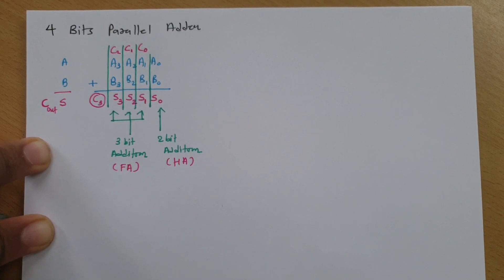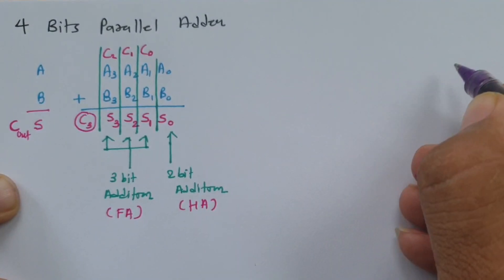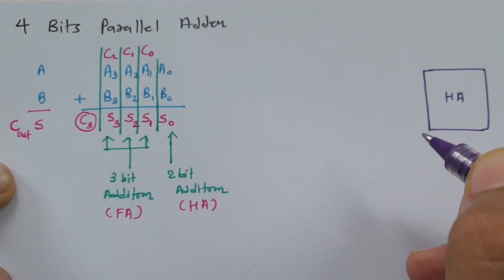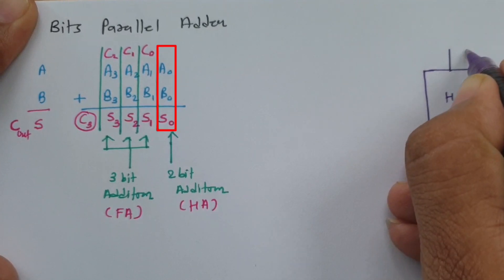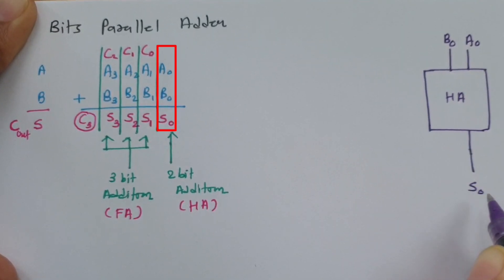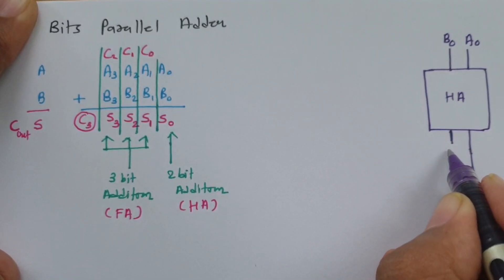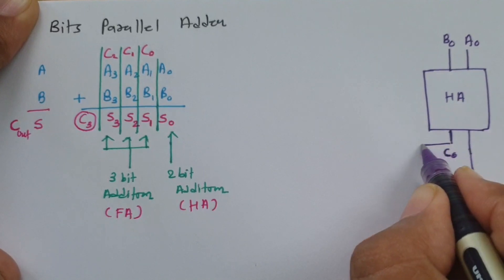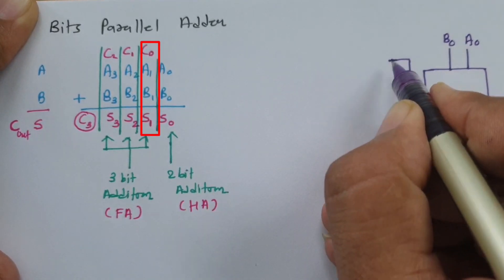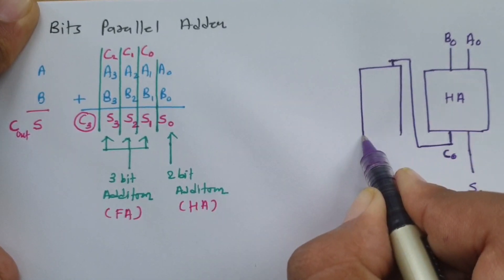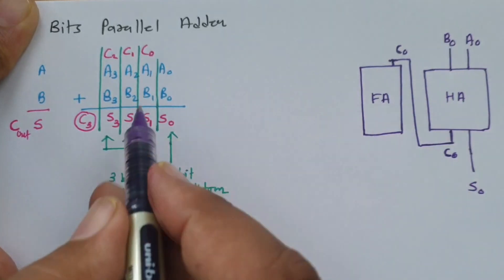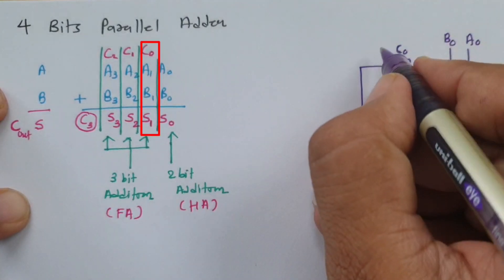For the first stage, we need to do 2-bit addition, so we will have a half adder. The inputs to the half adder are A0 and B0. The outputs are S0 and carry C0. This C0 carry is then given to the next 3-bit addition, which is performed by a full adder circuit. In that full adder, the inputs are C0, A1, and B1.